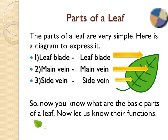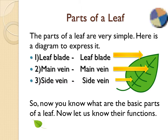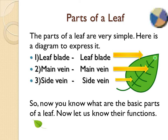Parts of a leaf. The parts of a leaf are very simple. Here is a diagram to express it. Leaf blade — this is the leaf blade. Main vein — this is the main vein.